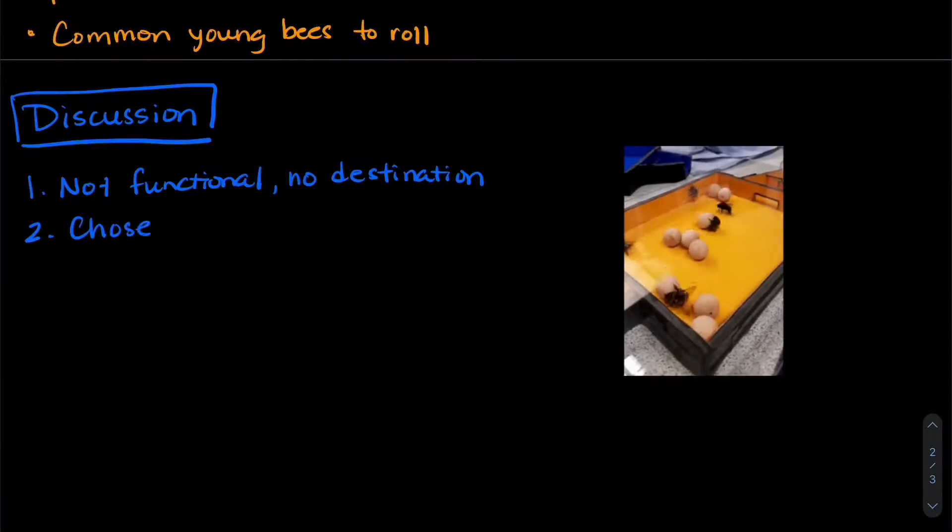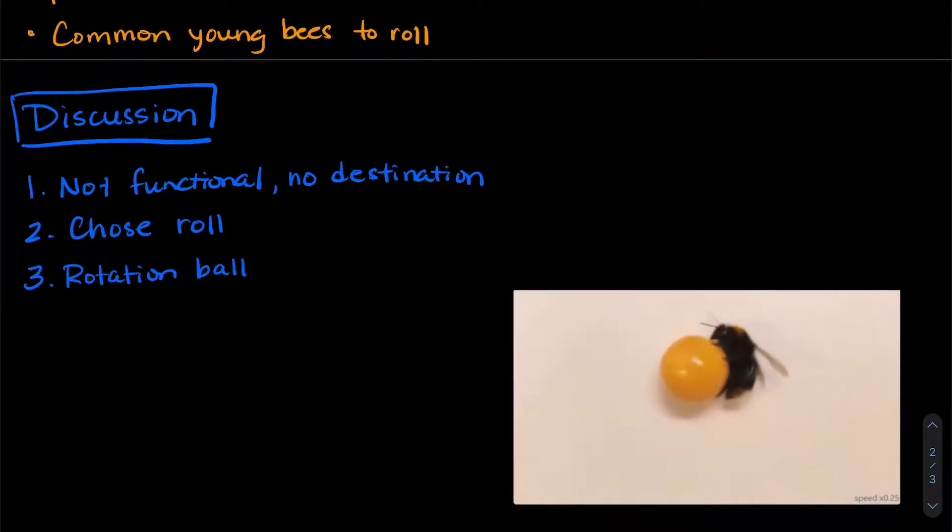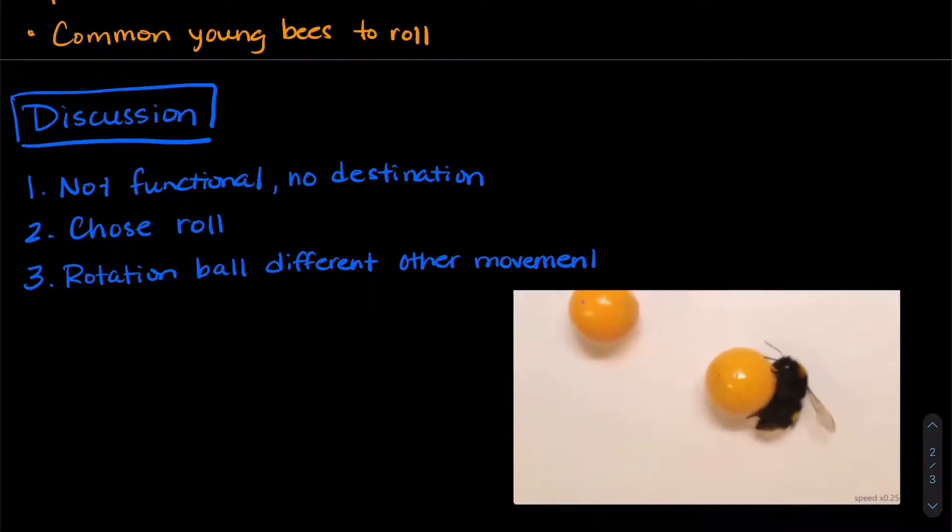Second, they chose to roll the wooden balls. They had options and weren't forced into anything. The third rule of play, the rotation of the ball as it rolls is different than other movements that a bee would normally do. For example, a bee going to pollinate a flower is a very different movement than the rotation of rolling a ball.